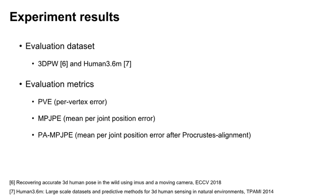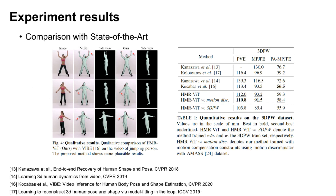To demonstrate the effectiveness of our method, we use the 3DPW and Human 3.6M datasets as evaluation data, and report performance on PVE, MPJPE, and PA-MPJPE. Table 1 shows the quantitative results of HMRV and existing HMR methods on the 3DPW dataset. The proposed method shows better performance in PVE and MPJPE metrics for both frame-based and temporal-based methods. In particular, HMRV shows competitive performance with VIBE, the state-of-the-art video-based HMR.